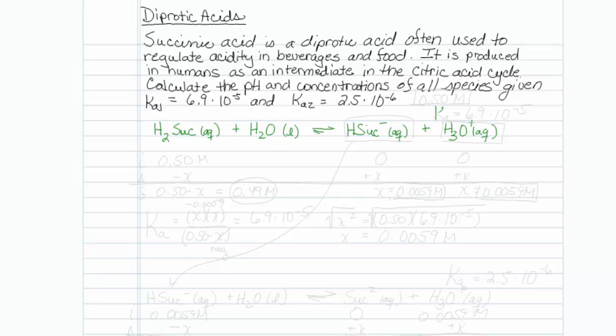That first Ka of 6.9 times 10 to the minus 5 refers to this reaction. I'm going to write the second reaction, because I need room to do a few things here. But the second reaction is we take Hsuc minus, which was our product in the first reaction, and react it with another water, in equilibrium, to produce Suc succinate, 2 minus now, plus hydronium, and the Ka for this reaction is known as Ka2, that's equal to 2.5 times 10 to the minus 6.